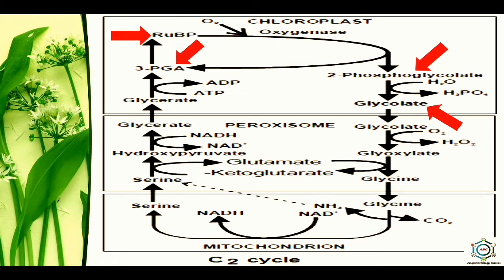RUBP is converted into 2-phosphoglyceric acid and 3-phosphoglyceric acid, and then the 2-phosphoglyceric acid is converted into glycolic acid. The glycolic acid, synthesized in the chloroplast as an early product, is then transported to the peroxisome. In the peroxisome, glycolic acid reacts with oxygen and is oxidized to glyoxylic acid and hydrogen peroxide with the help of enzyme glycolic acid oxidase.